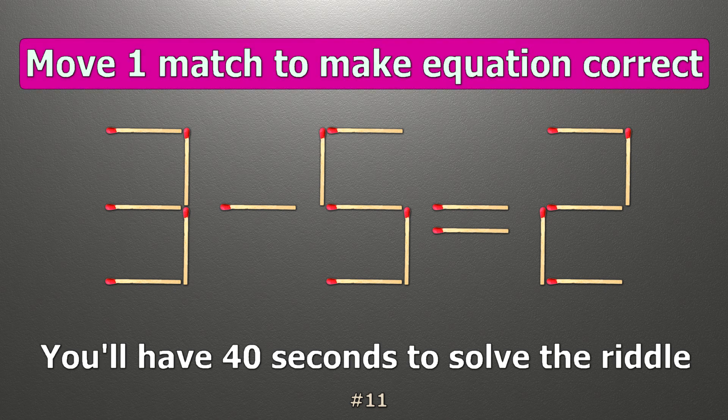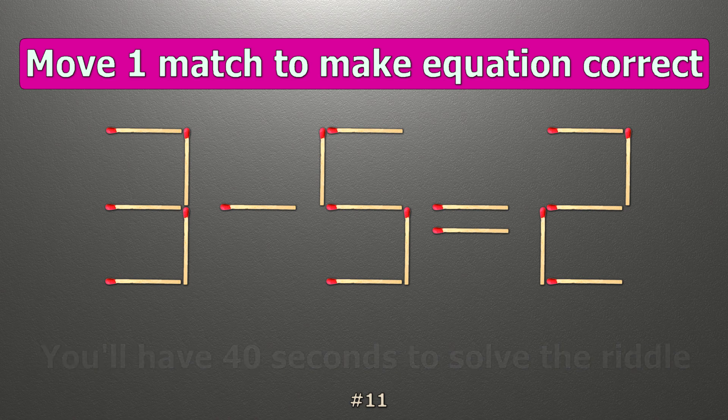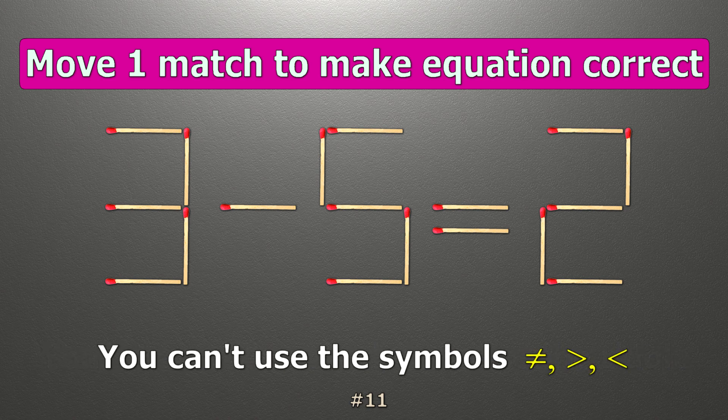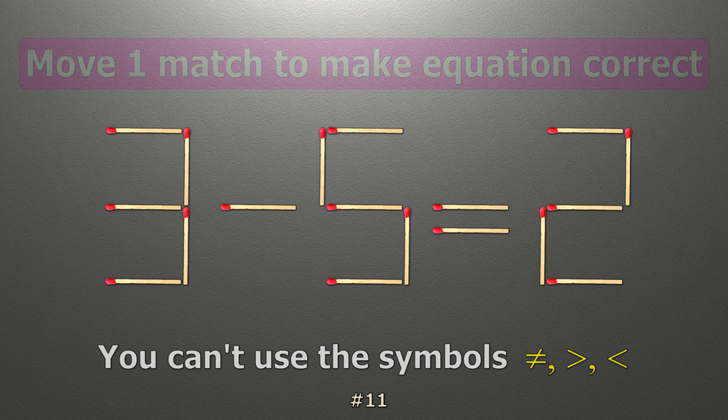We have the equality 3 minus 5 equals 2. Our equality is wrong. We need to move one match to make our equality correct.